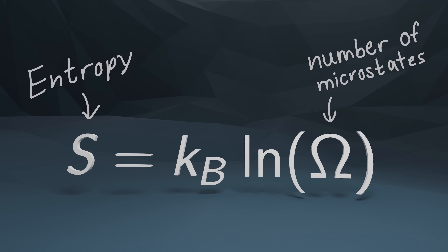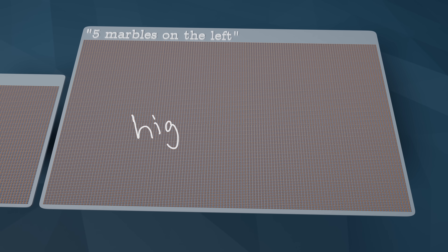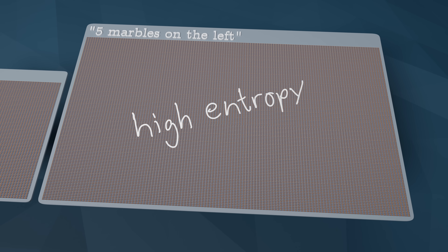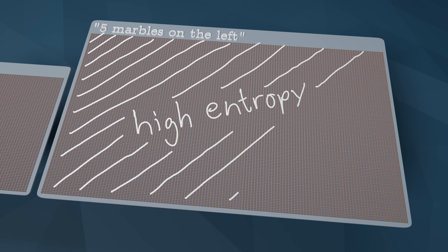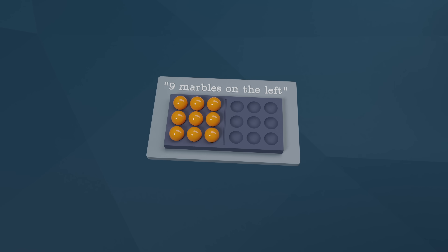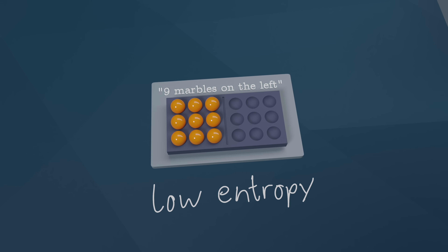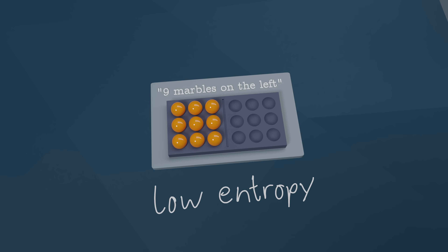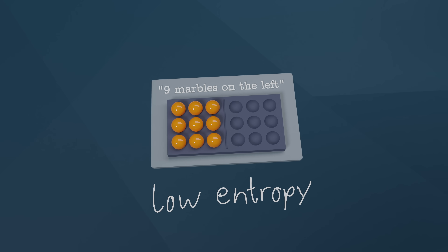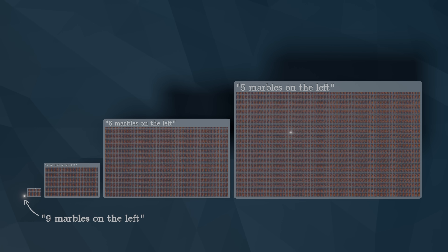For example, the five marbles on the left state has a high entropy because it contains a lot of microstates. While the nine marbles on the left macrostate has a very low entropy because it contains only one microstate — only one arrangement of marbles fits this description.